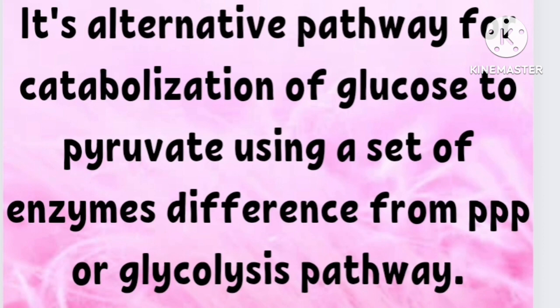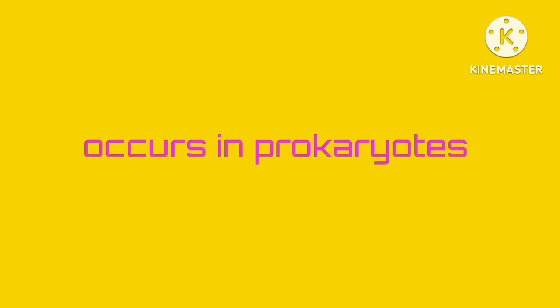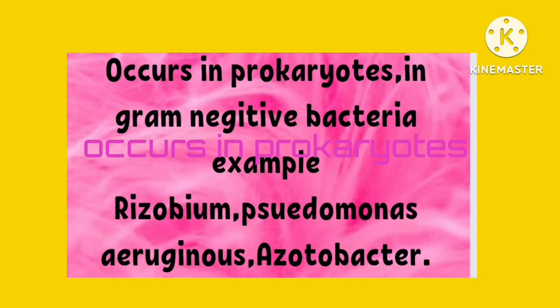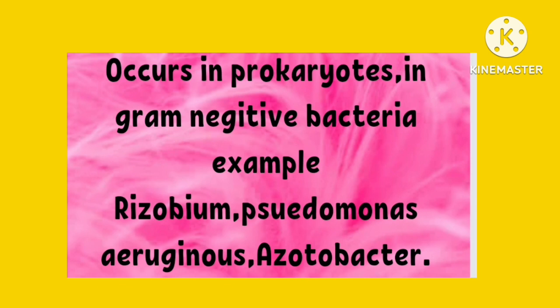This pathway was first reported by Michael Doudoroff and Nathan Entner. It occurs in prokaryotes, mostly in gram-negative bacteria such as Pseudomonas, Zymomonas, and Rhizobium.